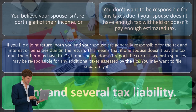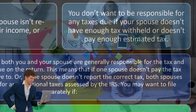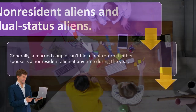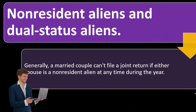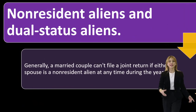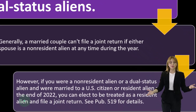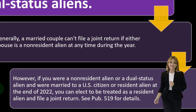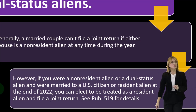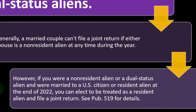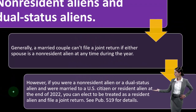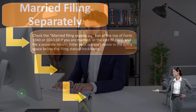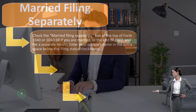Non-resident aliens and dual-status aliens: generally a married couple can't file a joint return if either spouse is a non-resident alien at any time during the year. However, if you were a non-resident alien or dual-status alien and were married to a U.S. citizen or resident alien at the end of 2022, you can elect to be treated as a resident alien and file a joint return. See Publication 519 on irs.gov for more information.